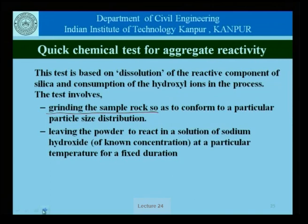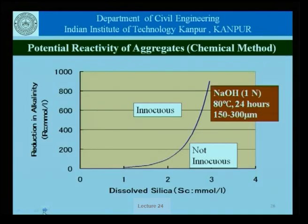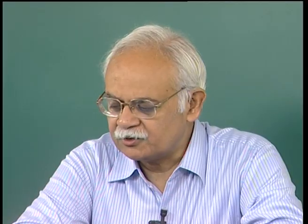The first step is grinding that rock sample, leaving the powder to react in a solution of sodium hydroxide of known concentration at a particular temperature for a fixed duration, and recording the loss of alkalinity and the increase in the silica content in the solution. This test is based on ASTM standards. Based on lots of tests that have been carried out, the reduction in alkalinity and dissolved silica content are plotted in a graph, and there is a line that defines that if the value comes in one region the aggregate can be deemed to be innocuous, whereas if it comes in another region it is not innocuous. The test is carried out at 1N NaOH at 80 degrees centigrade for 24 hours using rock samples ground to 150 to 300 micrometer size.